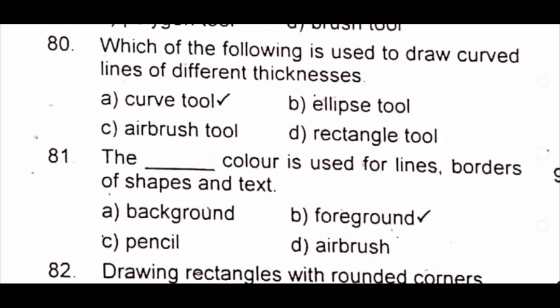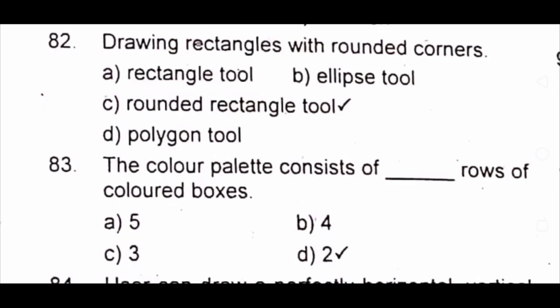Question 82: Drawing rectangles with rounded corners. A) rectangle tool B) ellipse tool C) rounded rectangle tool D) polygon tool. The answer is C) rounded rectangle tool. Question 83: The color palette consists of dash rows of colored boxes. A) 5 B) 4 C) 3 D) 2. The answer is D) 2.